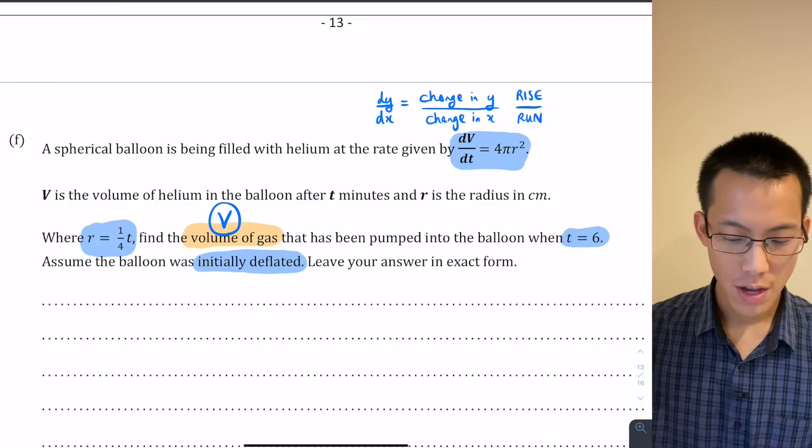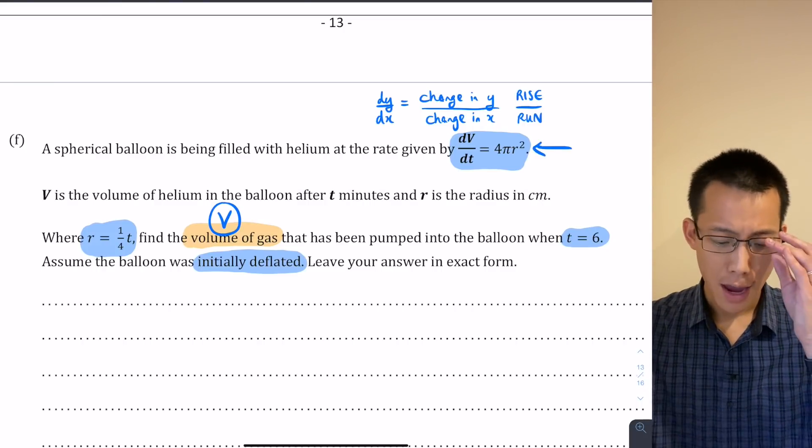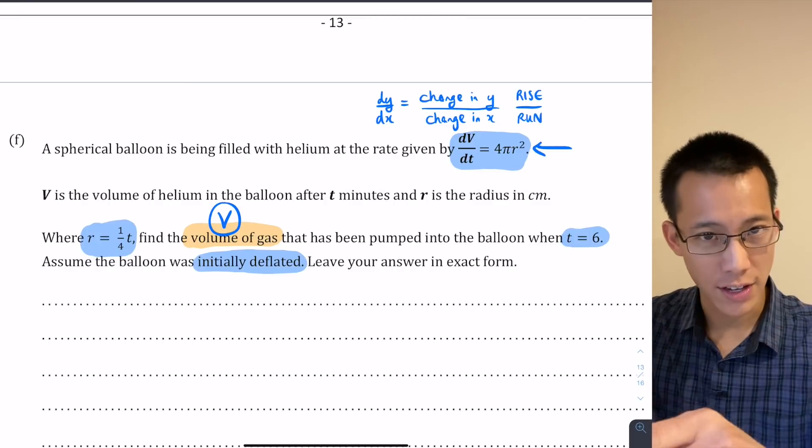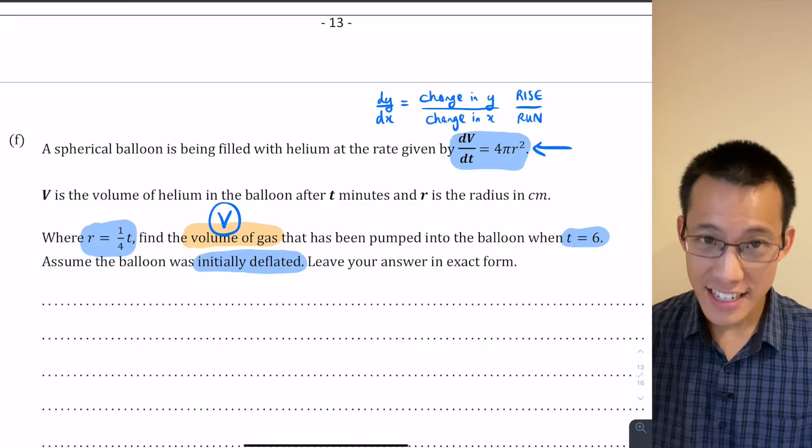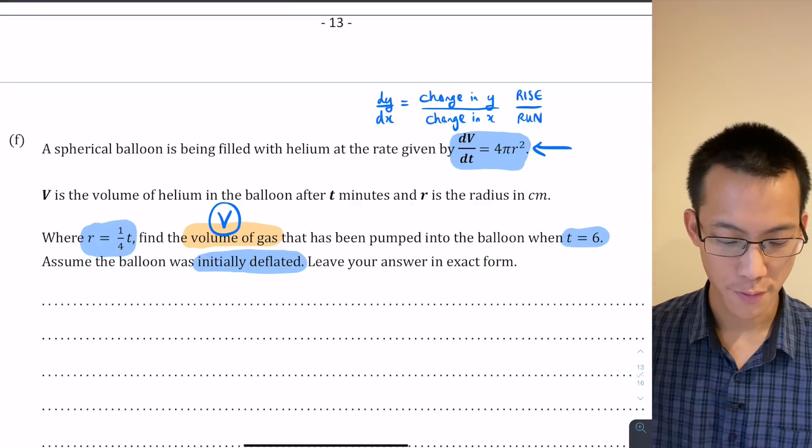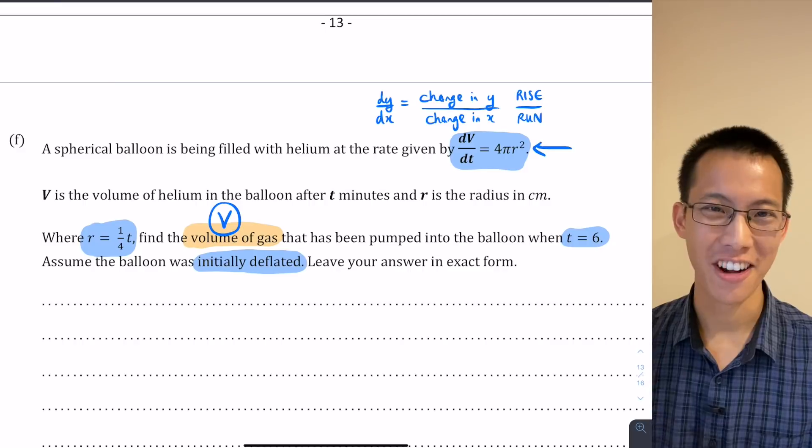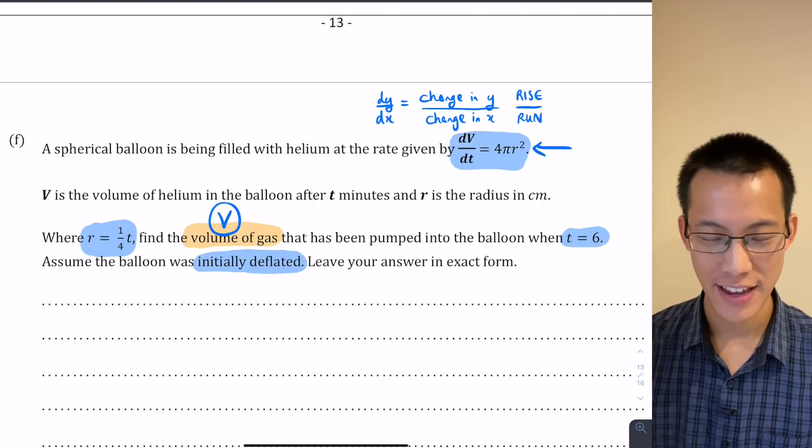How do I get to v equals? I'm going to start from this rate of change, dv/dt. If I were differentiating from v, I would get to dv/dt, but I want to go in the opposite direction. So I'm going to integrate from dv/dt to get up to v, the volume of gas. So I've mapped out a path through the question. I want to find volume, which means I need to integrate dv/dt.